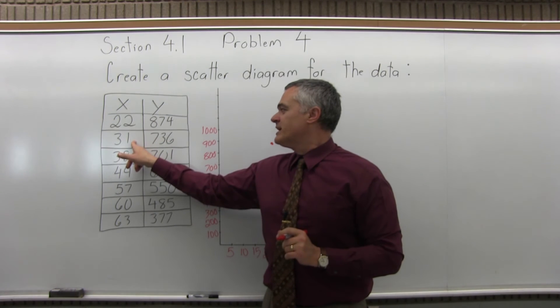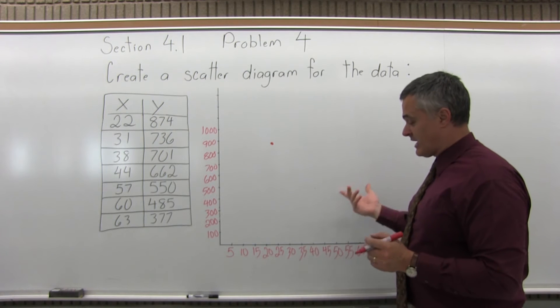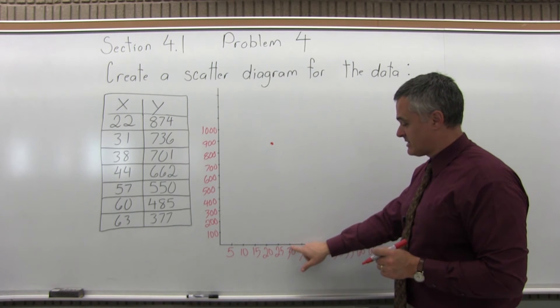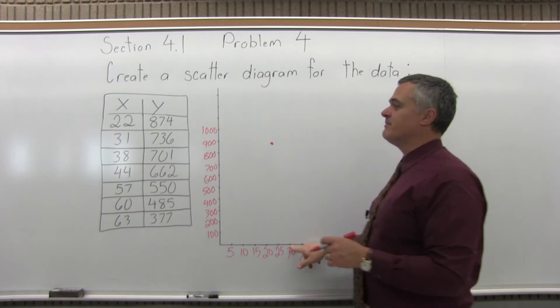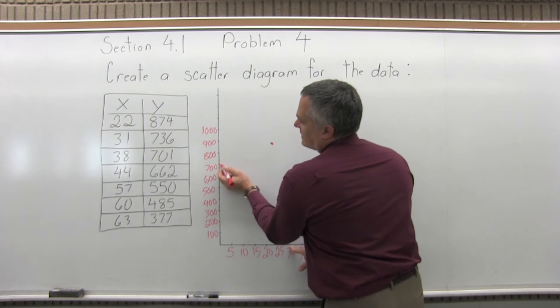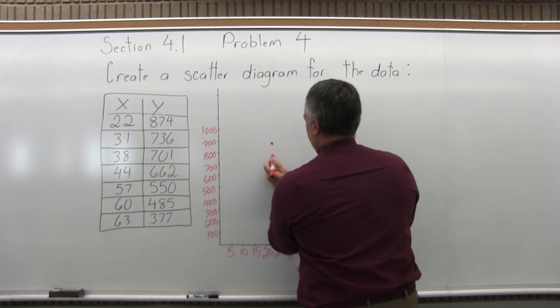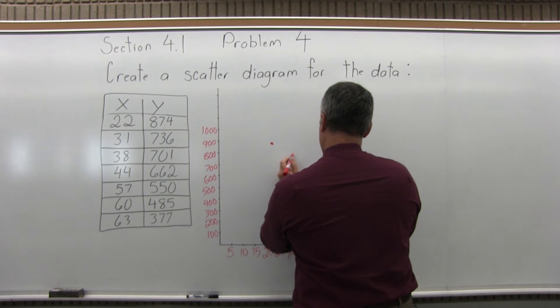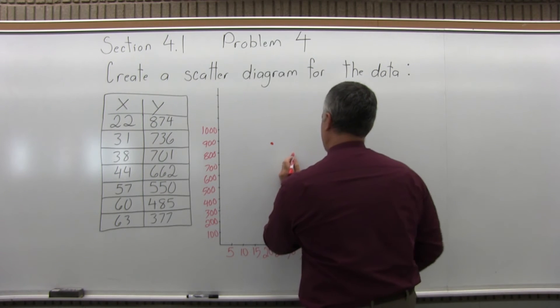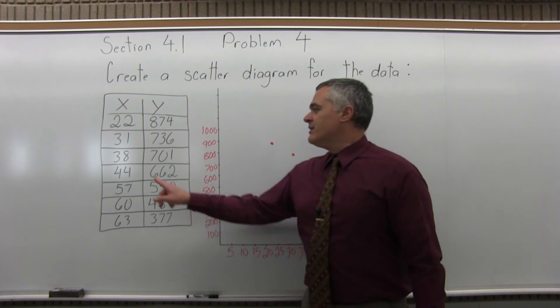So the next point, 31 for the X value, 736 for the Y. Over 31. Again, I don't have exactly 31 on my number scale, so a slight bit past the 30. And up 736. So if I do 700, a third of the way between 700 and 800 is 733 and a third. So 736, a very tiny bit higher by eye, really the same height. If I follow it out until I'm over the 31, put the point about there.